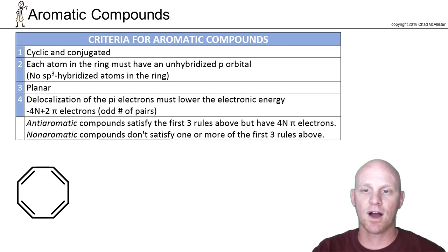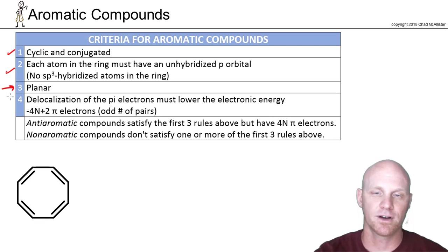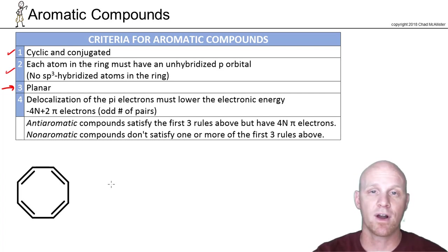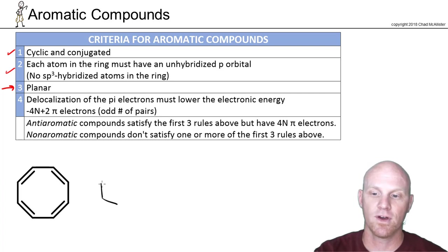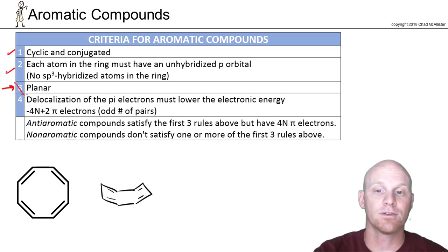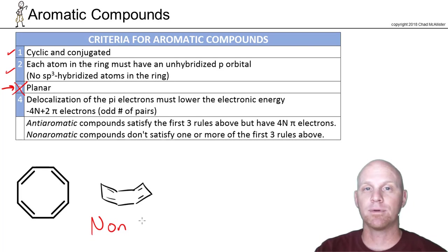The next example is 1,3,5,7-cyclooctatetraene. It is cyclic and conjugated, and every atom in the ring is sp2 hybridized — no sp3s. But the key question is whether it's planar. We said rings of seven atoms or fewer can definitely be planar; eight or more might or might not be. This specific example is not planar — it looks like a funky boat shape. Being non-planar, it fails rule number three and is therefore non-aromatic. Had it been planar, eight pi electrons would have made it anti-aromatic, but the inability to be planar makes it non-aromatic instead.